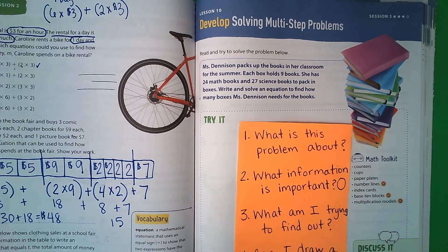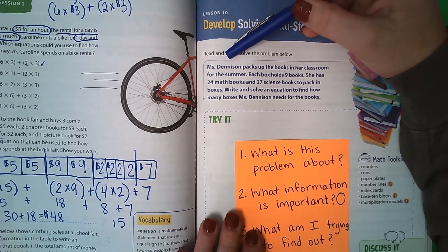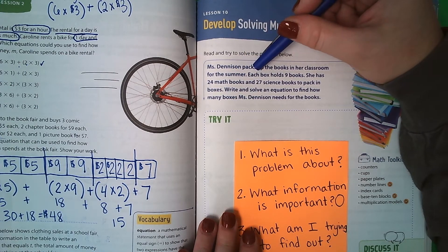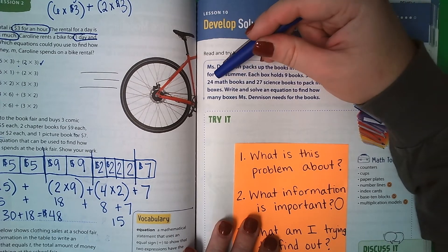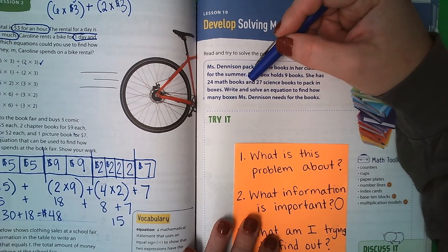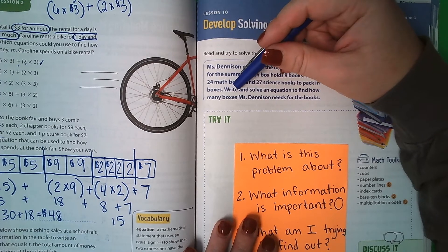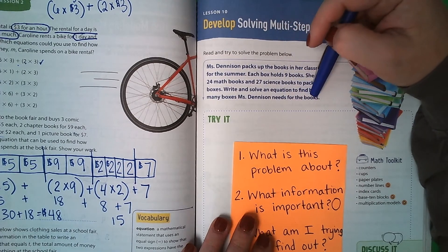Let's go ahead and read our problem here. Ms. Denison packs up the books in her classroom for the summer. Each box holds 9 books. She has 24 math books and 27 science books to pack in boxes. Write and solve an equation to find how many boxes Ms. Denison needs for the books.